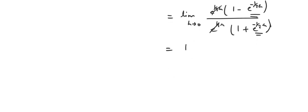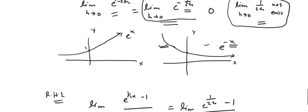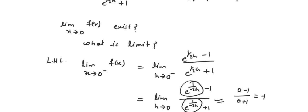So what we obtain: the left-hand limit is -1 and the right-hand limit is 1. Both the left-hand limit and right-hand limit exist, but they are not equal — we are obtaining -1 and +1 respectively. Therefore, the limit does not exist. Thank you.